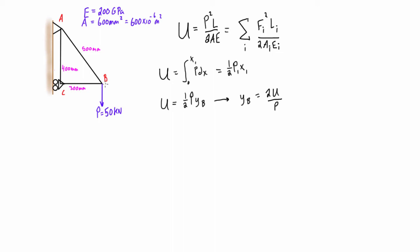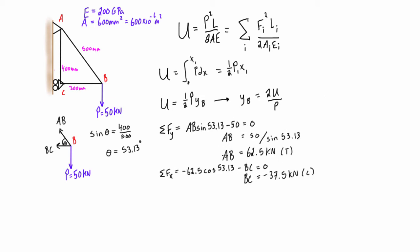We want to find the internal forces here so let's use the method of joints at B to do the sum of forces in the y direction and sum of forces in x direction and we're going to find the internal force in member AB is 62.5 kilonewtons and that is in tension and the internal force in BC is negative 37.5 kilonewtons so that negative just indicates that it is in compression.